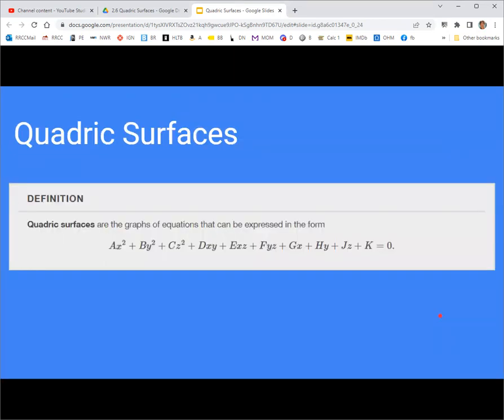On to quadric surfaces. The quadric surfaces are all cases of the general quadratic equation of three variables. Three variables x, y, and z, and we're allowing linear and second degree terms: x squared, y squared, z squared, x, y, z, but also xy, xz, yz terms in there. Anything like this where a through k are just constants is considered a quadric surface.